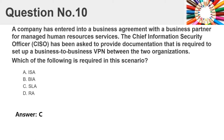Question 10: A company has entered into a business agreement with a business partner for managed human resources services. The Chief Information Security Officer has been asked to provide documentation required to set up a business-to-business VPN between the two organizations. Which of the following is required in this scenario?